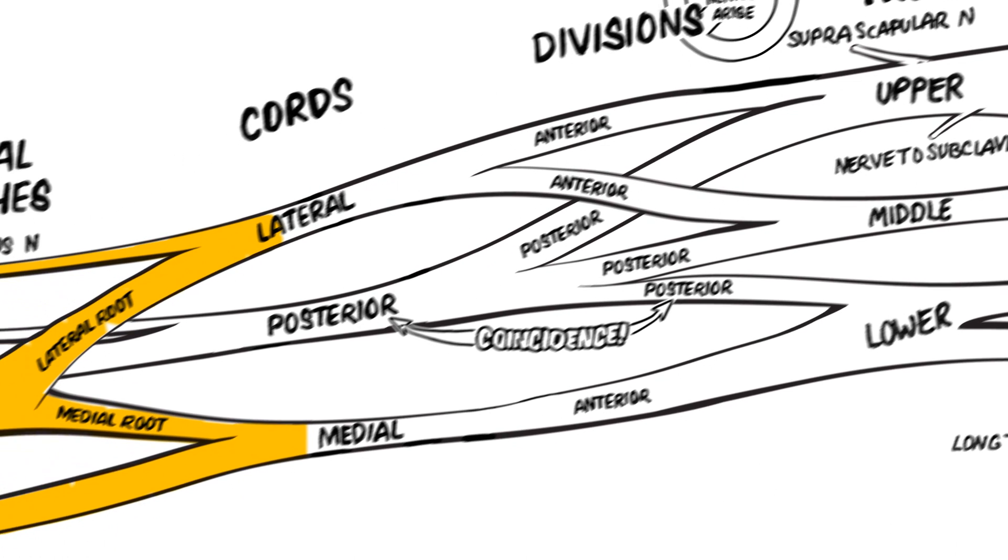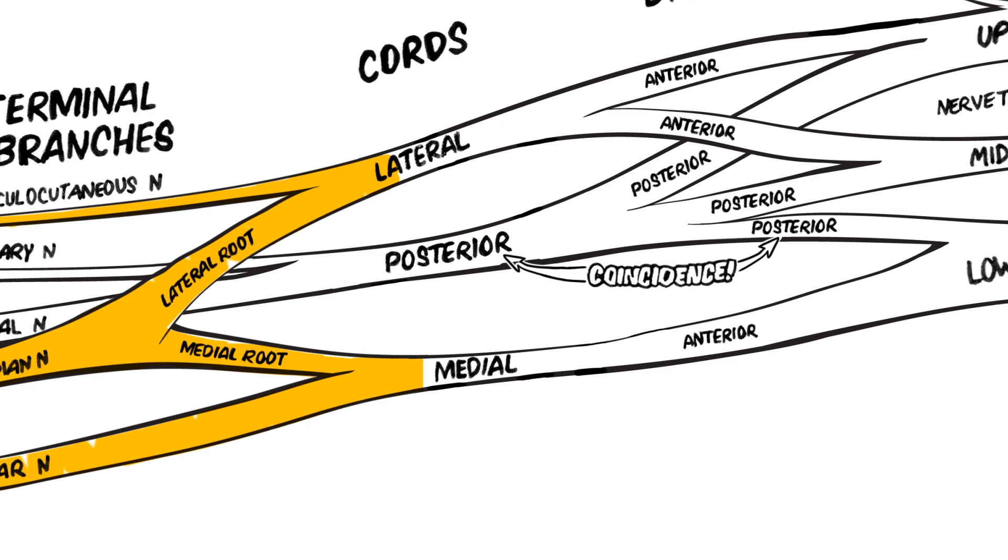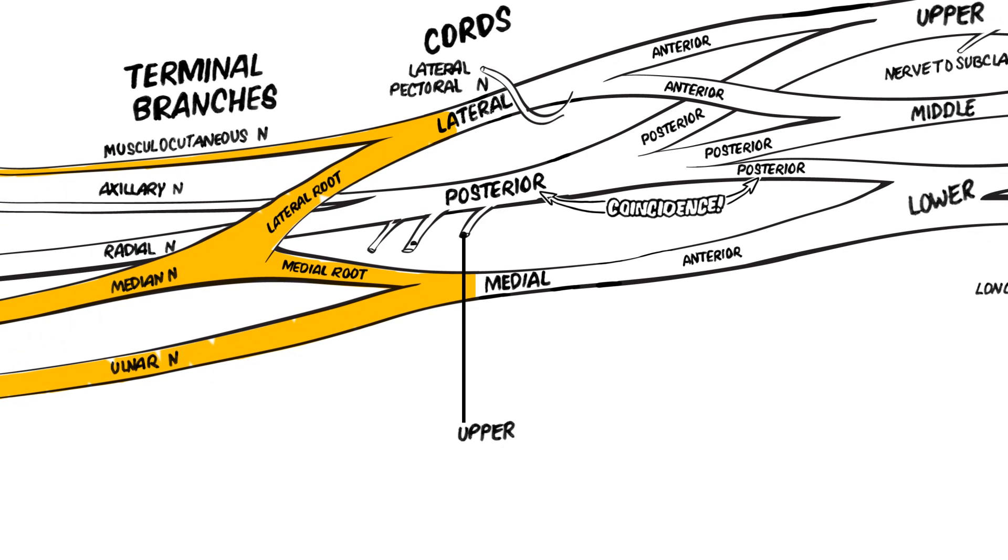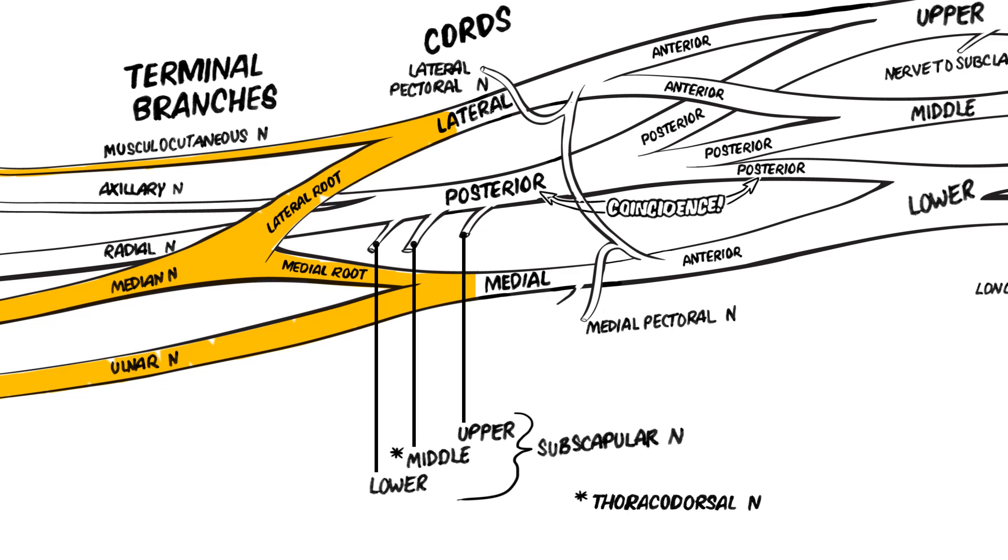Finally, the cords give rise to seven nerves in addition to their terminal branches. The lateral cord gives off the lateral pectoral nerve. The posterior cord gives off the upper, middle, and lower subscapular nerves. Note that the middle subscapular nerve is often called the thoracodorsal nerve. The medial cord gives off the medial pectoral nerve, the medial brachial cutaneous nerve, and the medial antibrachial cutaneous nerve.